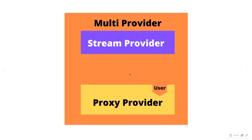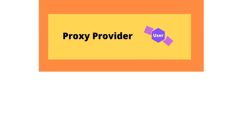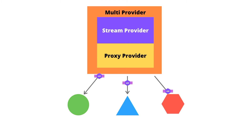Inside the multi-provider, we have a proxy provider that's listening to the Firebase user in order to manipulate the user data into something else and return it to the widgets listening to the proxy provider. Once a user logs in, the Firebase Authentication stream provider returns a user object that the proxy provider needs. The proxy provider then manipulates that user object — using its properties, for example the user ID or UID — and sends the UID to the widgets that are listening.